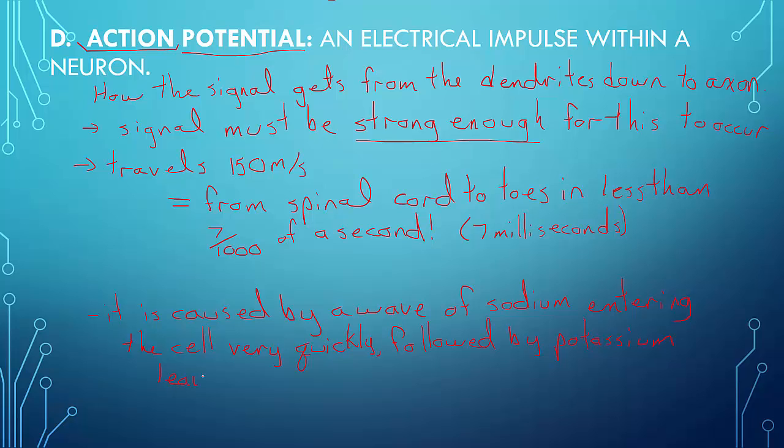So remember, the action potential is what allows us to react to things, and it is the signal itself that's going through from the dendrites to the axons. It travels super, super fast, and it's sodium, it's salts. It's sodium going in, potassium leaving, which is disrupting the amount of salts you have in your neuron, which is why it's causing a reaction to occur.